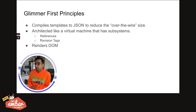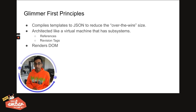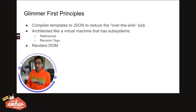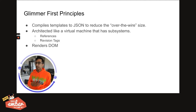I think about Glimmer with these first principles in mind. Number one, it compiles our templates into a JSON blob, and its goal is to reduce the over-the-wire size. Number two, it's architected like a virtual machine, and it has two main subsystems that we want to keep track of. Number one are references — anything we're pointing to that is a dynamic value rather than a static value. Number three, revision tags — are these dynamic references up to date or not? And if they're not up to date, we need to make sure those values get recomputed.